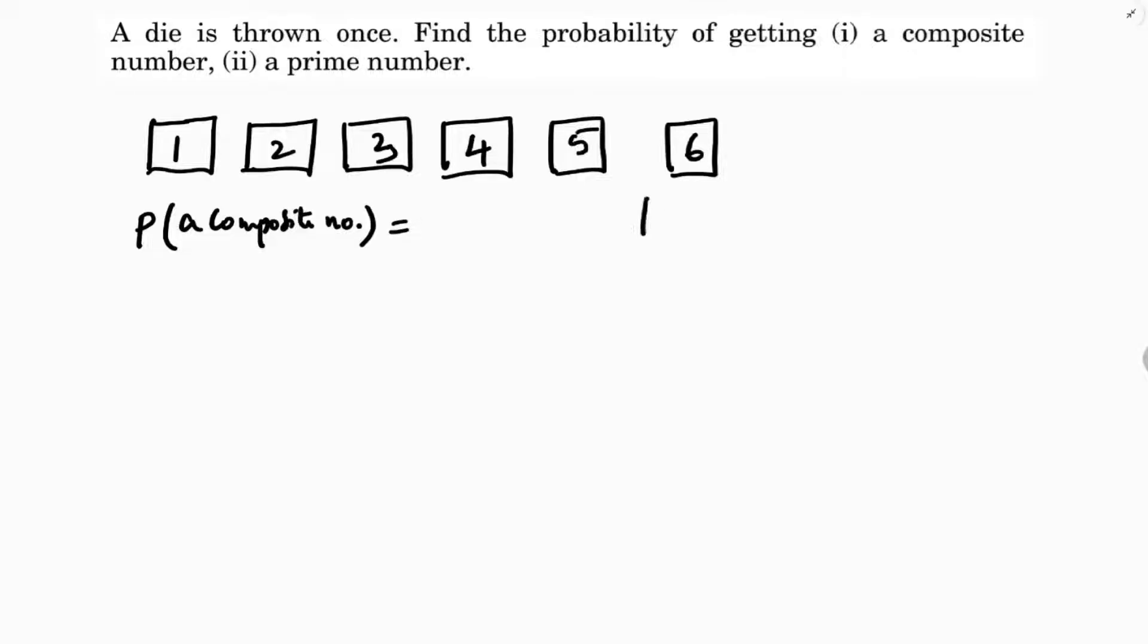I will write the formula here. Probability of an event is number of favorable outcomes by total number of outcomes.